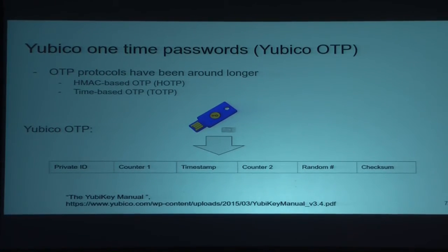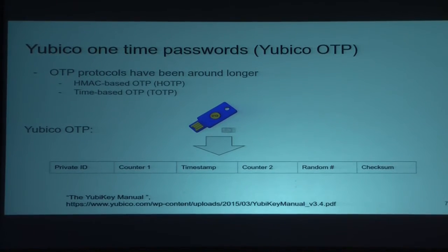Yubico OTP is definitely a big step-up. It's autonomous — you stick it in and it spits out ASCII characters. It's based on fields internal to the token: private ID, multiple counters, a random number, checksum. But the problem for me, if I want to make my own, is that Yubico OTP relies on a third-party server. I might be able to make a token that integrates with Yubico's servers, but then I can't really sell that because it covertly has a dependency on Yubico. Or I could run my own servers, but I'm just a cheap college kid and no one would want to integrate with that.